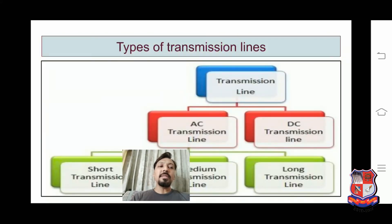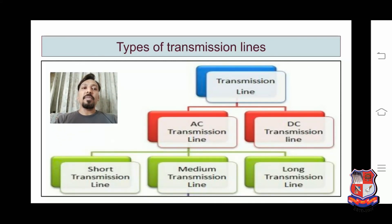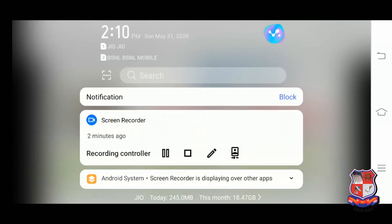Here you can see the flow chart which represents the types of transmission line. As discussed, these are AC and DC transmission lines, and further AC transmission line is classified into single-phase and three-phase, and as per the length: short, medium, and long. That is all about the transmission line.